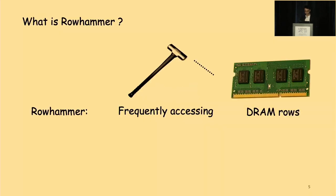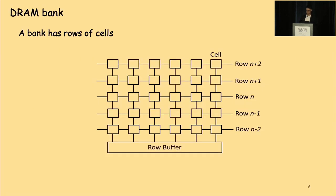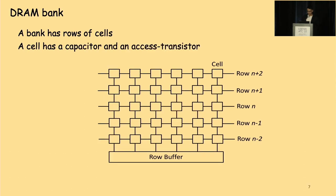What is Rowhammer? Literally speaking, Rowhammer is to frequently access specific DRAM cells in DRAM rows. As the density of cells in DRAM chips increases significantly, it becomes highly likely for these cells to electrically interact with each other. Frequently accessing a DRAM row allows an attacker to influence the electrical charge of its neighboring row — that is the root cause of Rowhammer. A DRAM bank has rows of cells and a row buffer serving incoming memory accesses. Each cell has a capacitor and an access transistor; the capacitor represents bit 0 or bit 1.